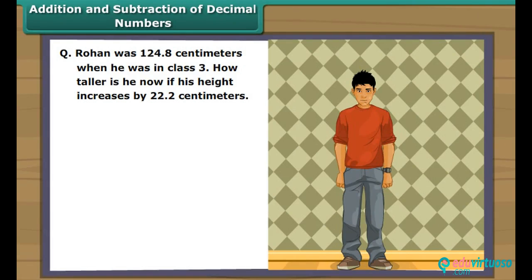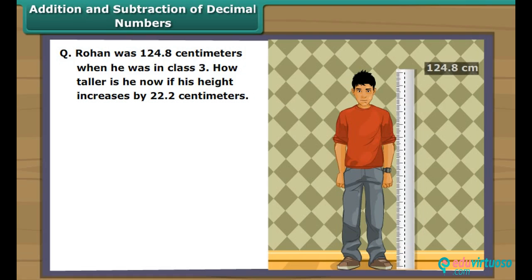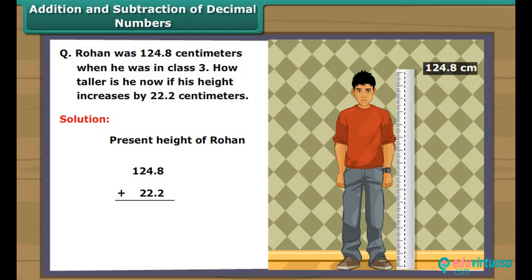Addition and subtraction of decimal numbers. Rohan was 124.8 cm when he was in class 3. How much taller is he now, if his height increases by 22.2 cm? The height of Rohan is equal to 124.8 cm plus 22.2 cm. Remember, while adding the numbers, the decimal point of another number lies exactly below that of first number. We add first the digits at the right side of the decimal, followed by the addition of digits on the left side. The sum of 8 and 2 gives 10; we write 0 at the bottom and 1 as a carryover on 4. The sum of 1, 4 and 2 gives 7, and 2 and 2 gives 4. Thus, the height of Rohan is 147.0 cm.